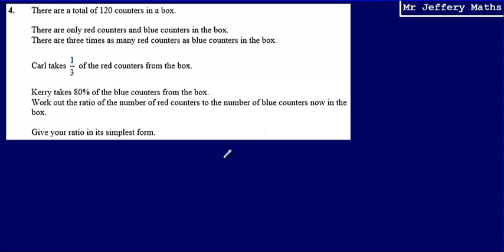This is question 4 from a series of videos taking a look at the Edexcel practice papers. Here we're told there are a total of 120 counters in a box. There are only red counters and blue counters in the box, and there are three times as many red counters as blue counters.